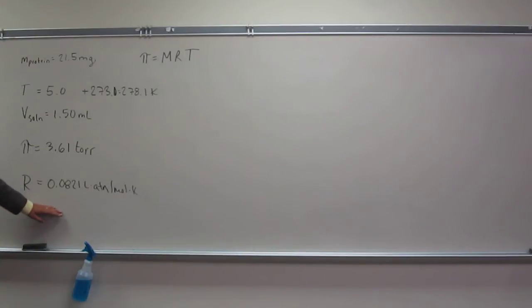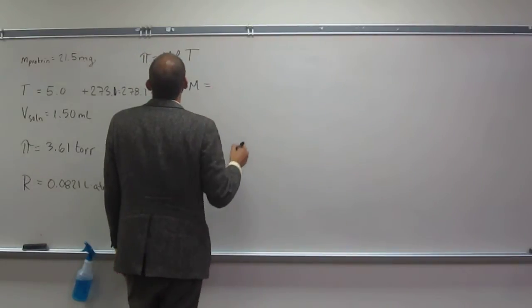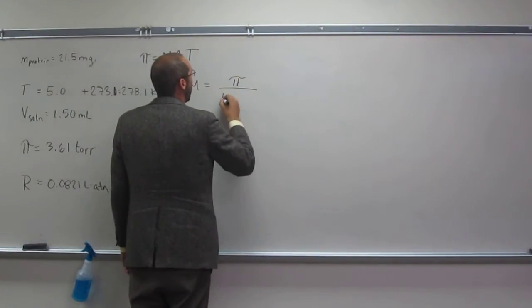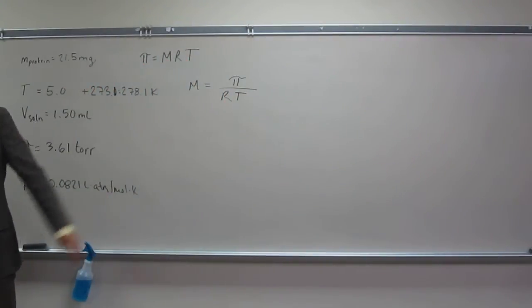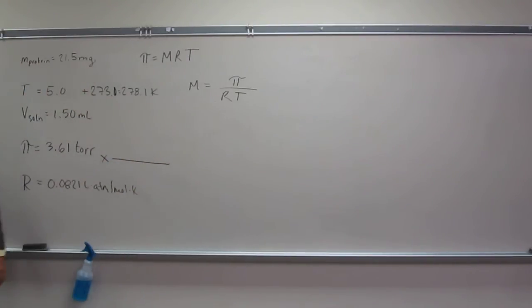So let's rearrange this equation to solve for molarity. Molarity equals pi divided by RT. Everybody okay with that? But pi here is in units of torr, right? So we're going to have to convert that before we do anything as well. Do you remember the conversion factor between torr and atm? 760.